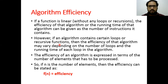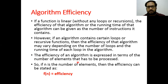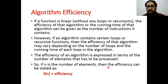So if we don't have any loop, then efficiency will be different. But if we have loops or recursion, then efficiency will be different. As per the third point, the efficiency of an algorithm is expressed in terms of the number of elements that has to be processed. If n is the number of elements, then the efficiency can be stated as f(n) equals efficiency.